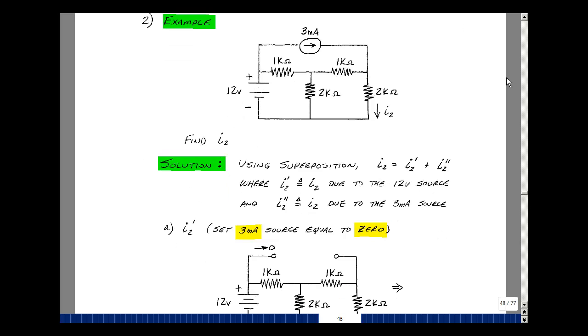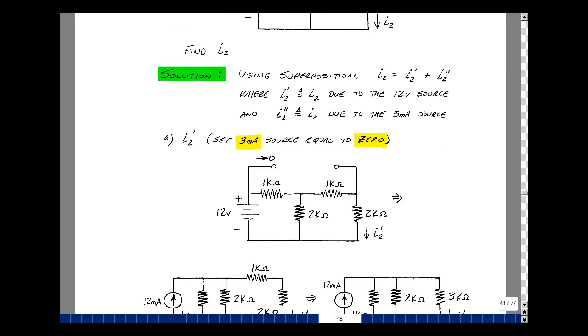Let's set the 3 milliamp source equal to 0. That's just an open circuit. And now I've got a circuit where I'm going to solve for this current I2 due to the first source, the 12-volt source.